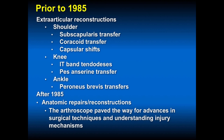What's happened in the generation I've been in practice? Prior to 1985, when I was a resident, we could only do extra-articular reconstructions. We couldn't address the anatomic injury directly because we didn't have the equipment nor the visualization. Before arthroscopy, we did things open: extra-articular reconstructions of the shoulder, subscapularis transfers, coracoid transfers, capsular shifts — which actually sounds familiar to 2017, where we're doing a lot of this arthroscopically or with arthroscopically aided open techniques.